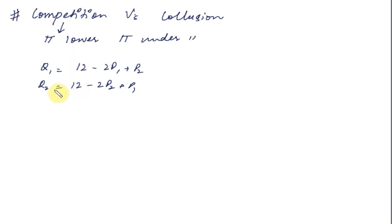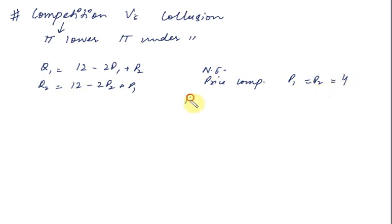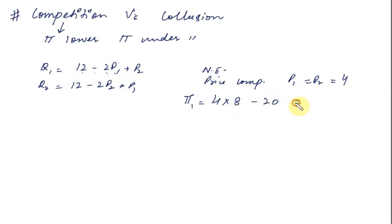We had seen that under the Nash equilibrium, when firms are price competing, they charge a price of 4. When they charge a price of 4, the profit of firm 1 is: price times quantity, where quantity equals 12 minus 2 times 4, which is 8, plus 4, so quantity is 8 units. Then profit is 8 times 4 equals 32, minus the fixed cost of 20, giving a profit of 12.